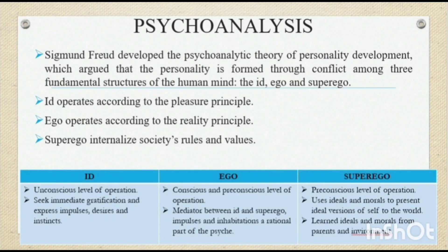The id is the unconscious level. The ego is a conscious and pre-conscious level. The superego is a pre-conscious level, and it uses ideals and morals to present ideal versions of the self to the world.